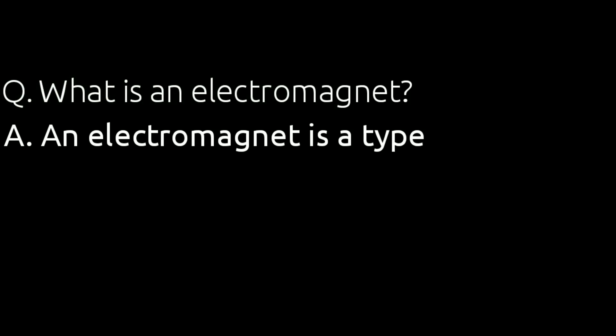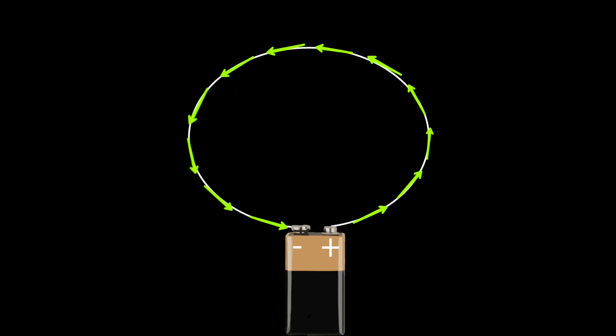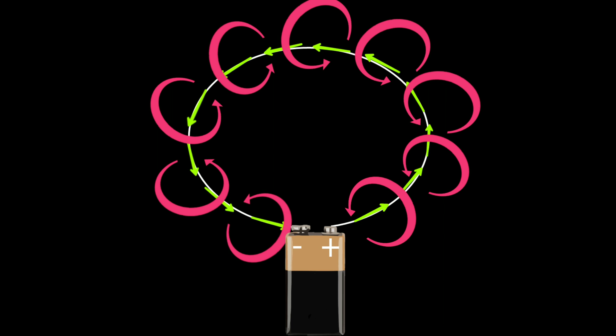This means an electromagnet is a type of magnet in which the magnetic field is produced by electric current. If we take a piece of wire and apply a potential difference to its ends, electric current will pass through it, causing a magnetic field around the wire.